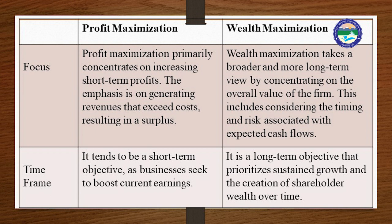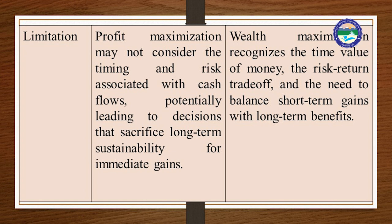In terms of timeframe, profit maximization tends to be a short-term objective, while wealth maximization is a long-term objective that prioritizes sustained growth and the creation of shareholder wealth over time. Regarding limitations, profit maximization may not consider the timing and risk associated with cash flows, potentially sacrificing long-term sustainability for immediate gains. Wealth maximization, by contrast, recognizes the time value of money, the risk-return trade-off, and the need to balance short-term gains with long-term benefits, making it superior to profit maximization.